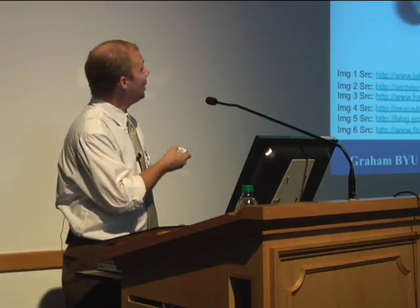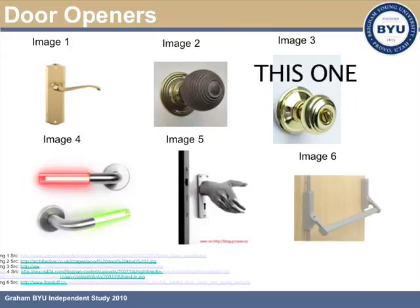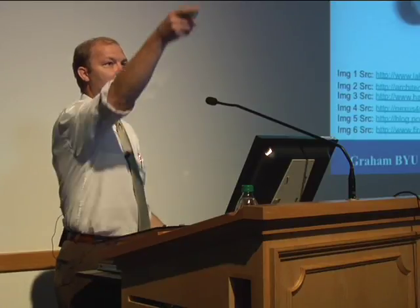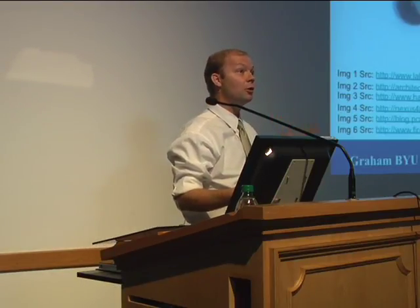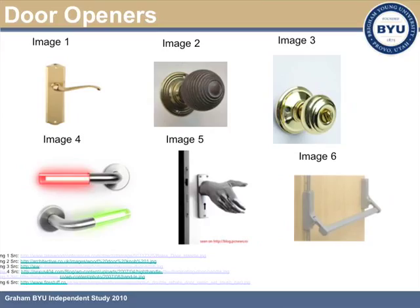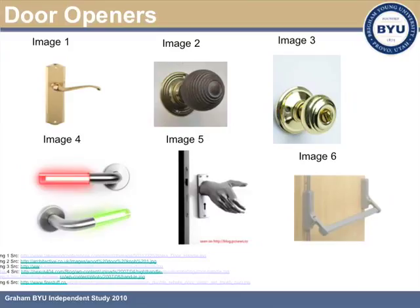How about this one or this one? What are some affordances of those doorknobs? One of the affordances is it actually prevents or makes difficult certain kinds of actions — a young child doesn't have the wrist action to open a door like this. And this one even has a little lock on it, which is even trickier to get open.